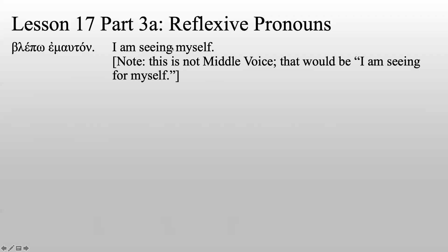Blepo emouton — I am seeing myself. Emouton is the direct object and it's pointing back to the subject. In English, saying 'I am seeing me' would be grammatically incorrect because 'me' has already been mentioned as 'I' in the nominative. So we say 'I am seeing myself' — the action reflects back to the person doing it. Reflexive pronouns reflect the action back to the subject; the action goes out from them and comes right back because they're also the direct object. Note: this is not the middle voice, which would mean 'I am seeing for myself.'